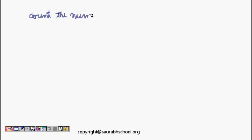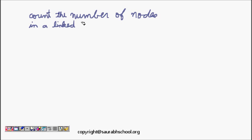How do you traverse a linked list and count the number of nodes in a given linked list? This is the question: count the number of nodes in a linked list.